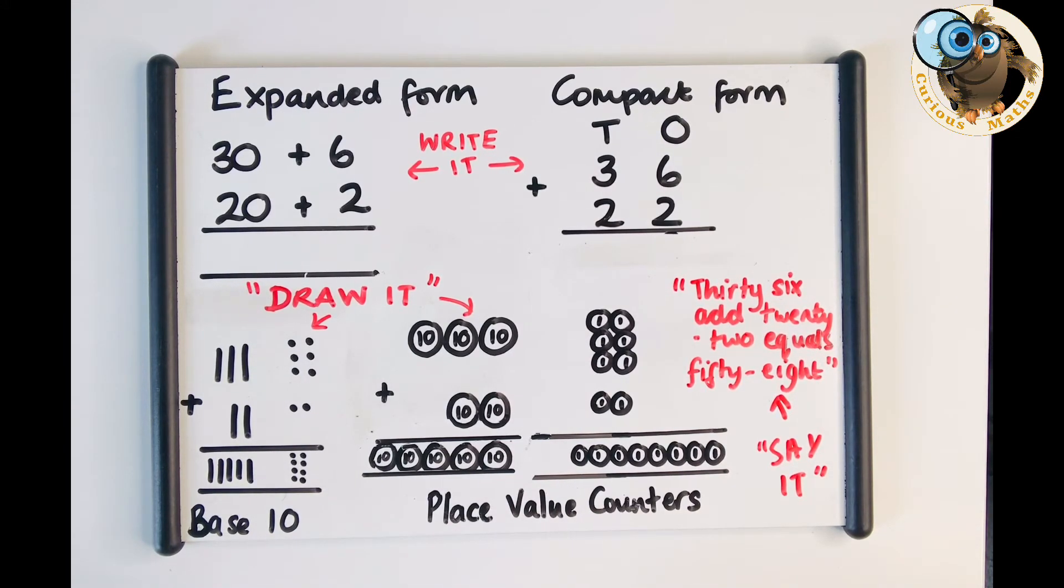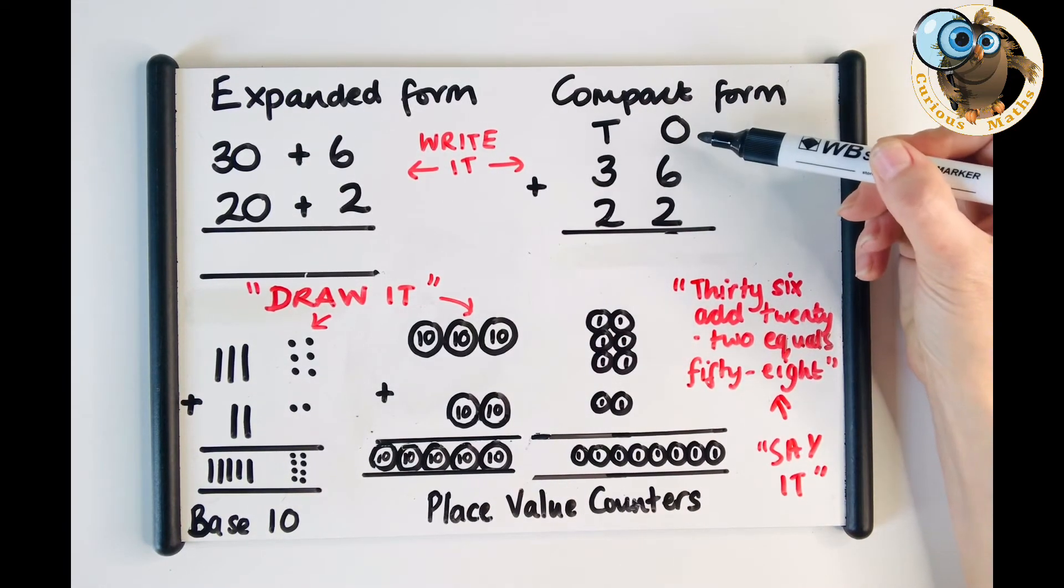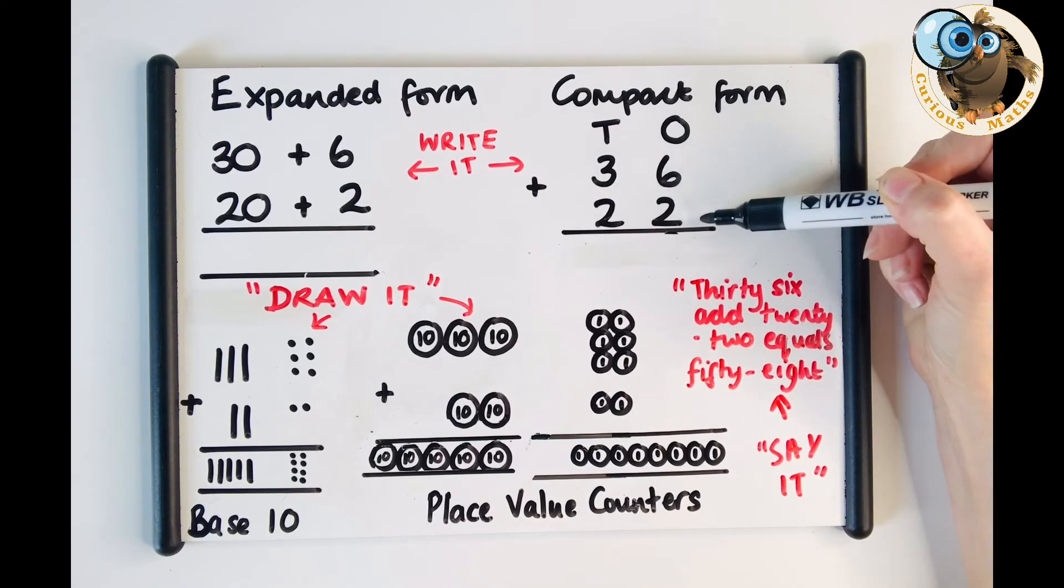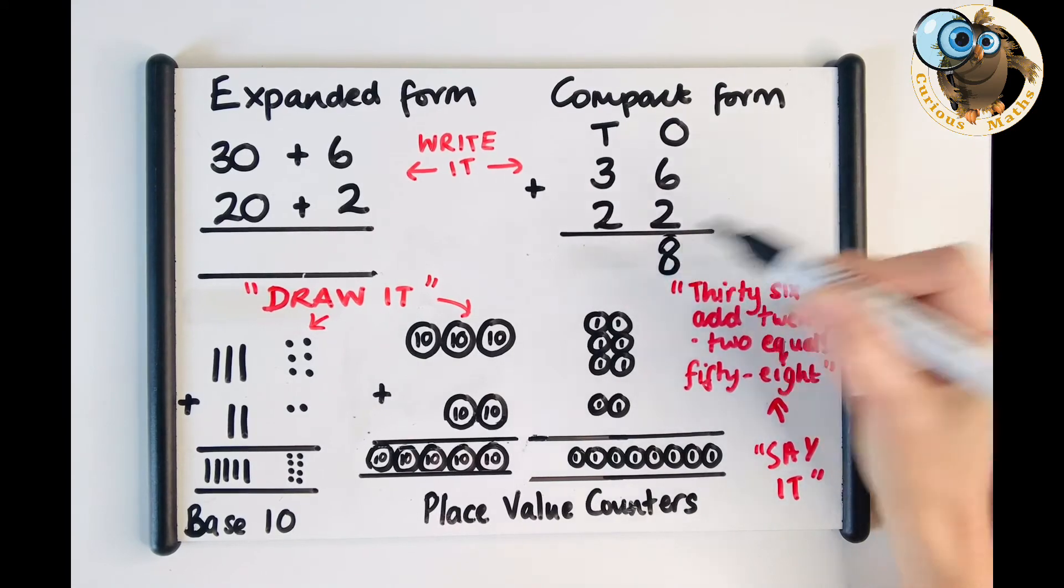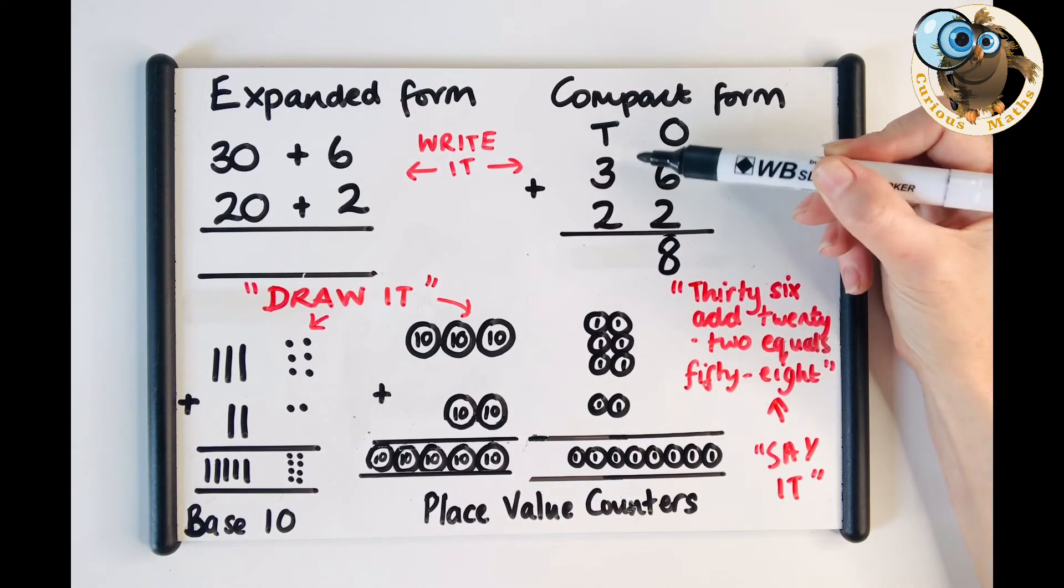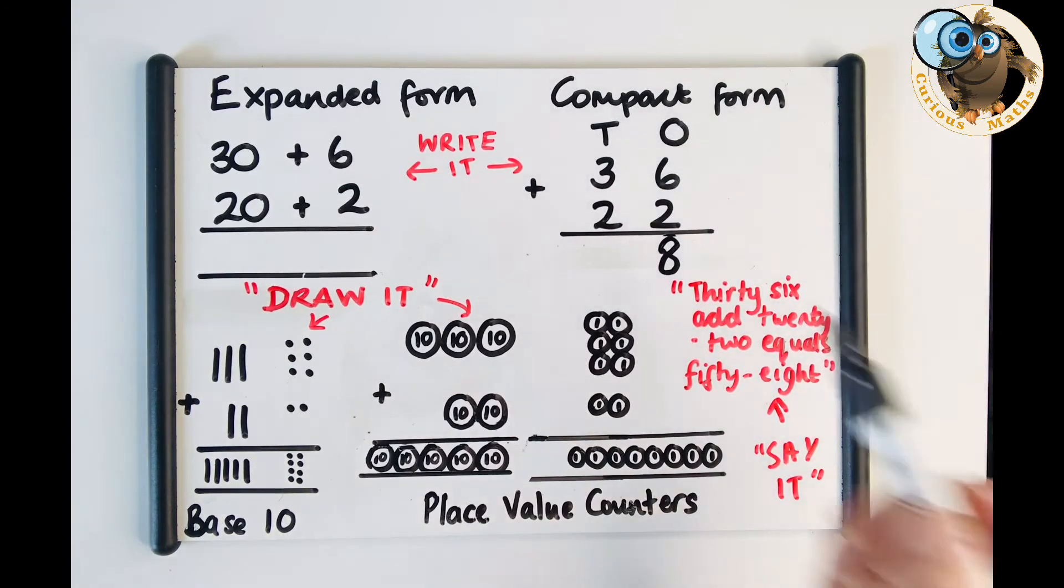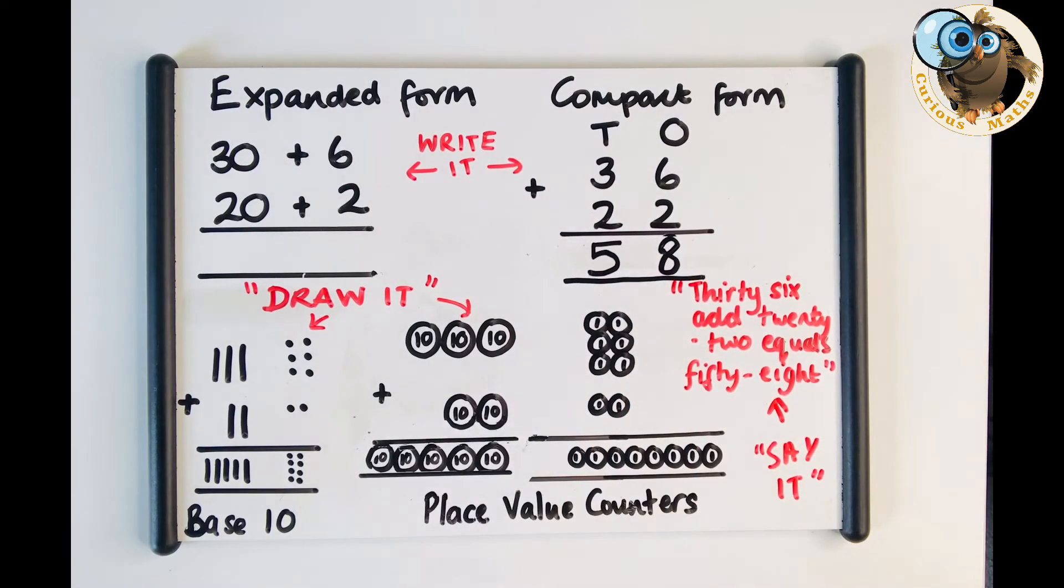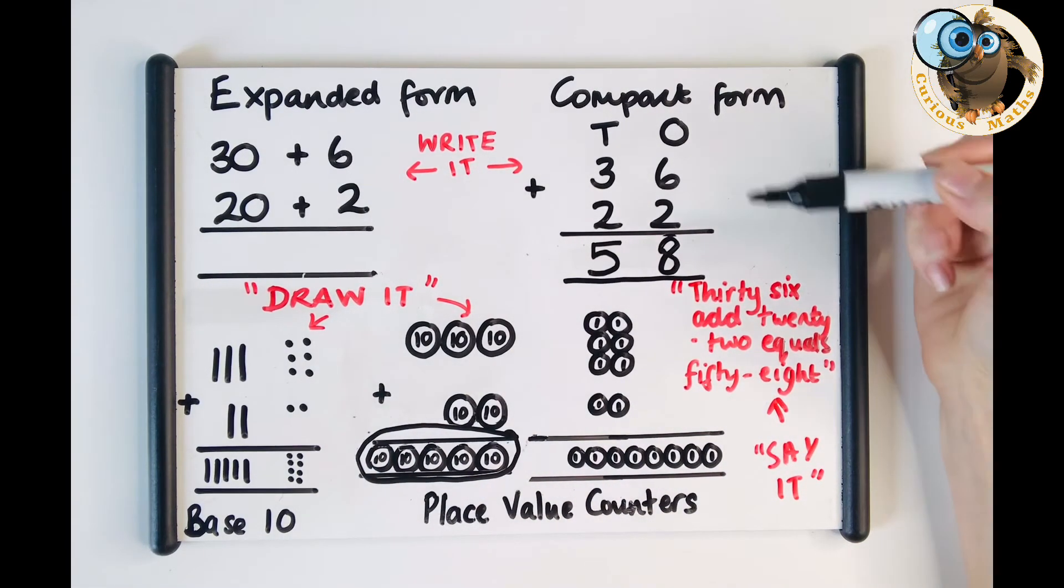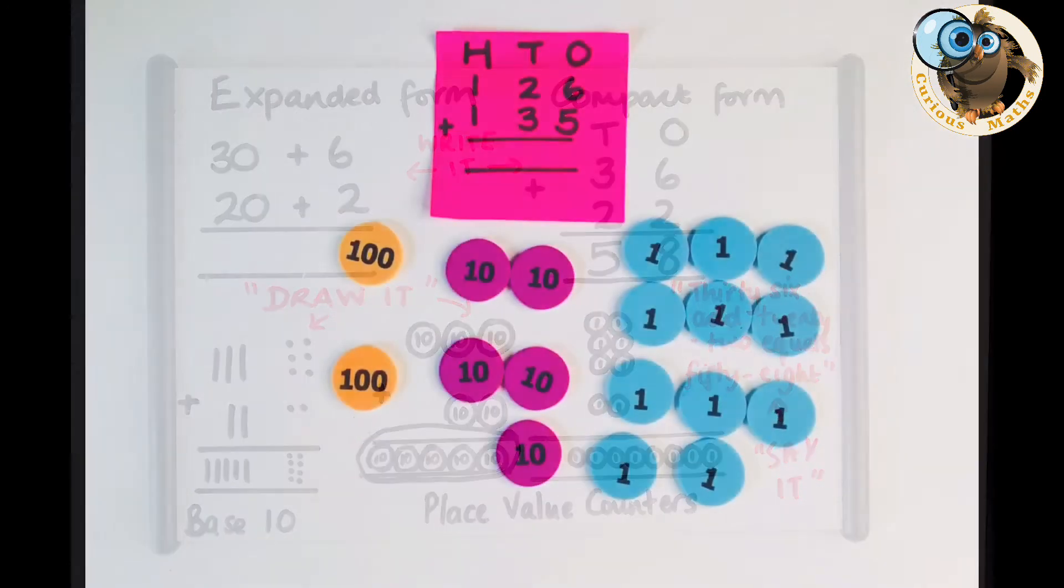So if we were going to do a draw it and a compact form this is the language that we like to use so we always start in the ones column so we've got six ones plus two ones how many ones have we got we've got eight of those things we call ones then we go to the tens column we have three tens plus two tens how many tens have we got we've got five of those things we call ten five tens equal 50 and we can go back to our draw and we can check that it's 50 in total if we need to so 36 add 22 equals 58.